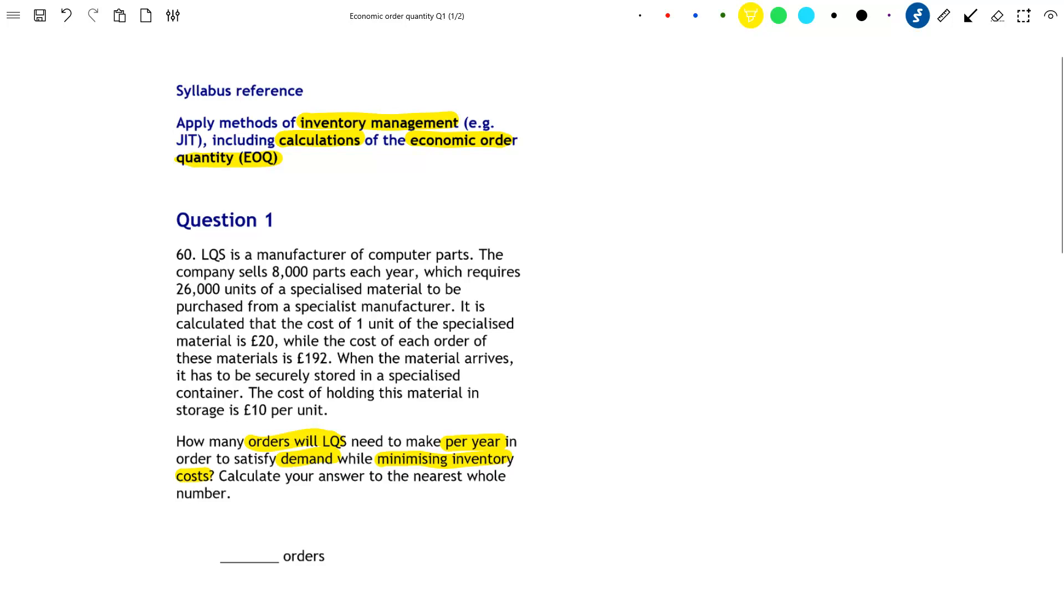Well, if we're being asked to calculate the order frequency that will also minimize inventory costs, then we're clearly talking about using the economic order quantity model as the EOQ model has a formula associated with it that is designed to minimize inventory costs while satisfying demand.